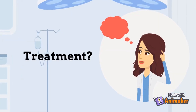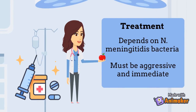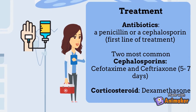So what exact treatments can be given to a person who now has the disease? Treatment of meningococcal disease varies depending on its presentation and the specific Neisseria meningitidis bacteria an individual has been infected with, but all treatment must be aggressive and immediate. All meningococcal disease is treated with antibiotics; however, the specific antibiotic depends on whether the bacterial strain is resistant to specific antibiotics, including penicillin. Since it is vital for antibiotics to be given as soon as possible to prevent serious complications or death, the first line of treatment will be either a penicillin or a cephalosporin. The two most frequently given cephalosporins are cefotaxime and ceftriaxone. The medication is typically given intravenously for 5–7 days.